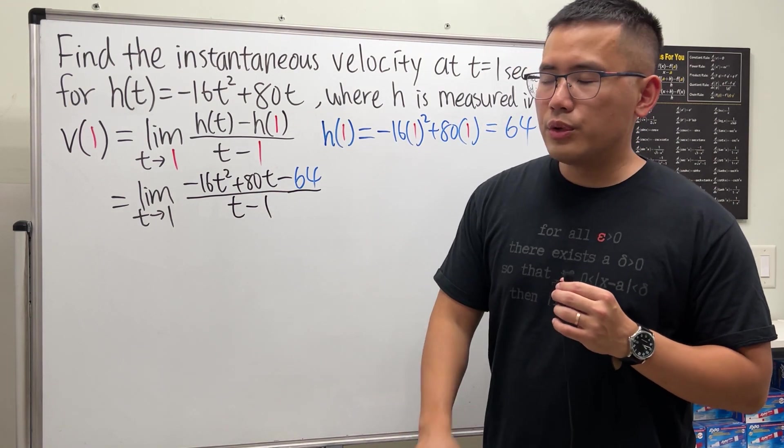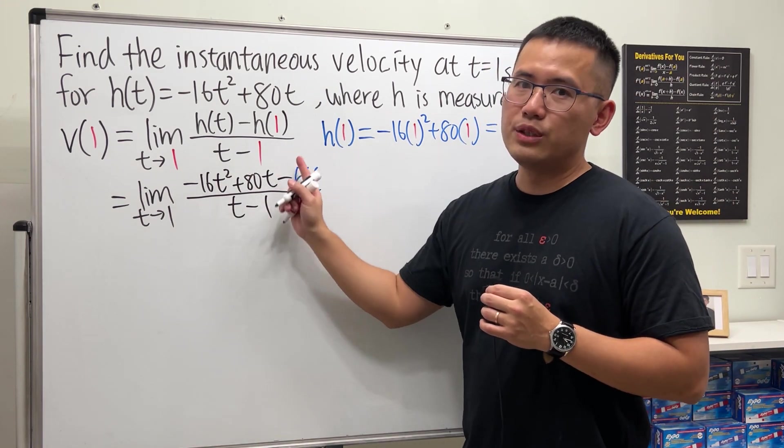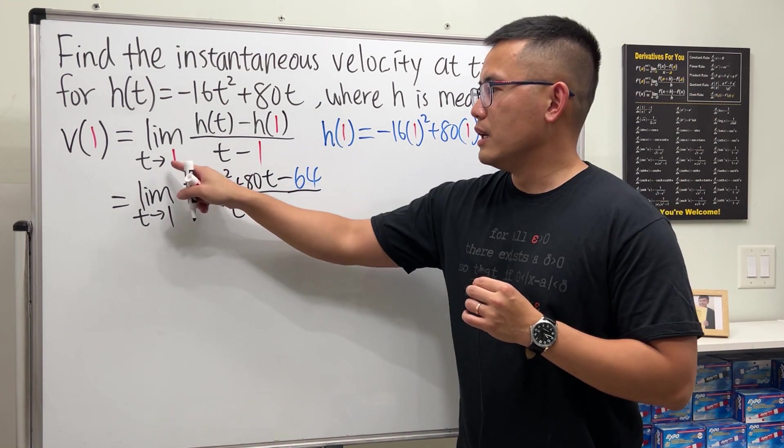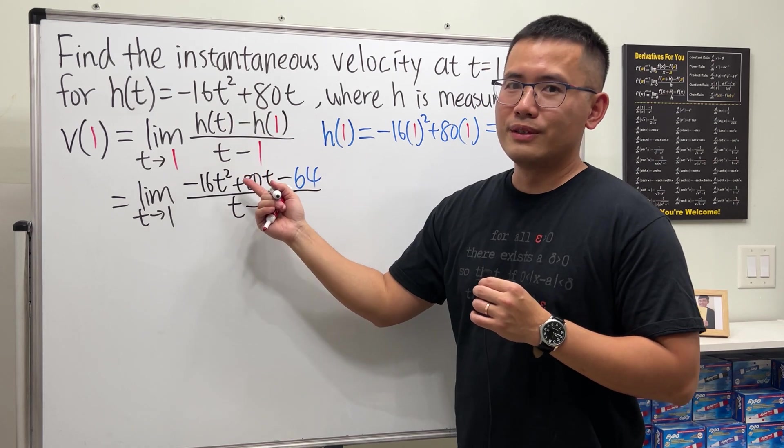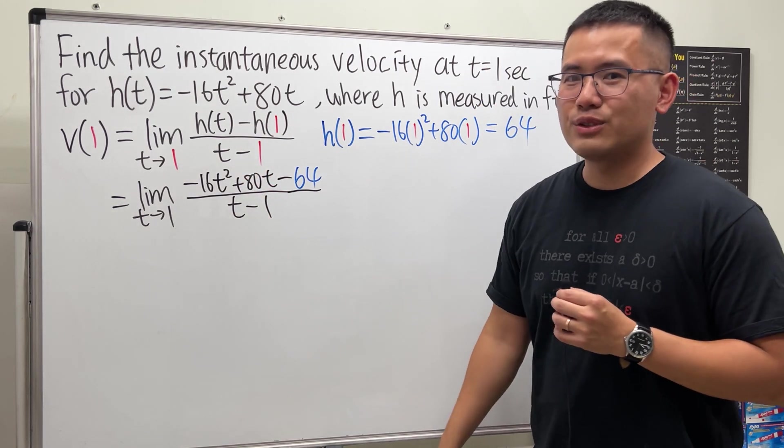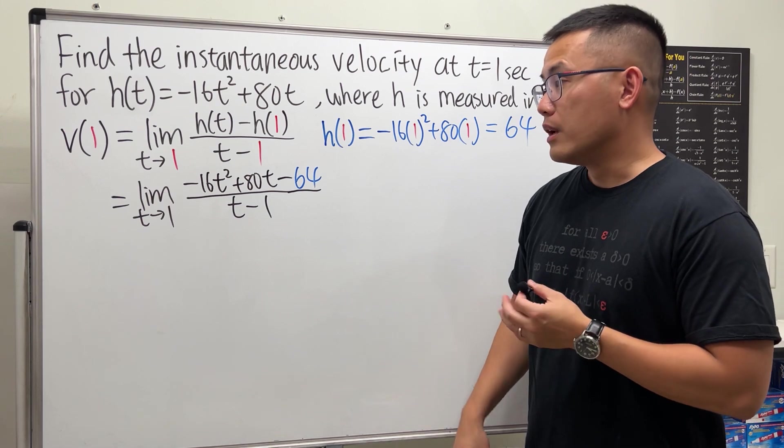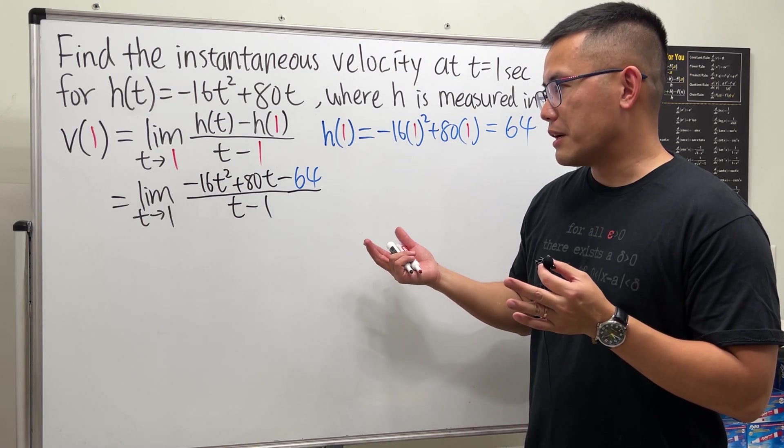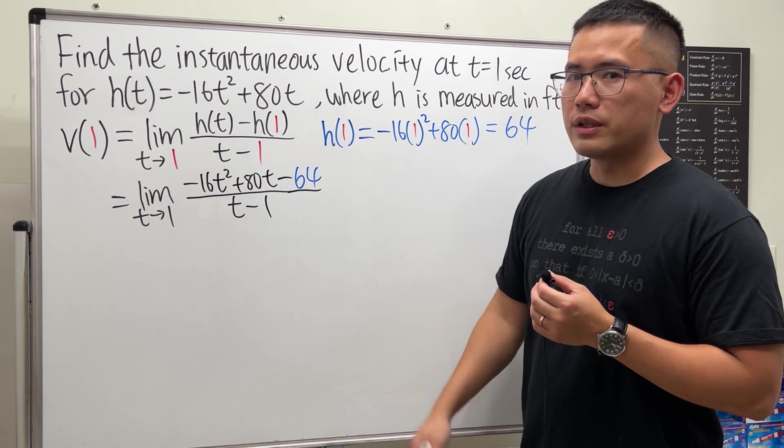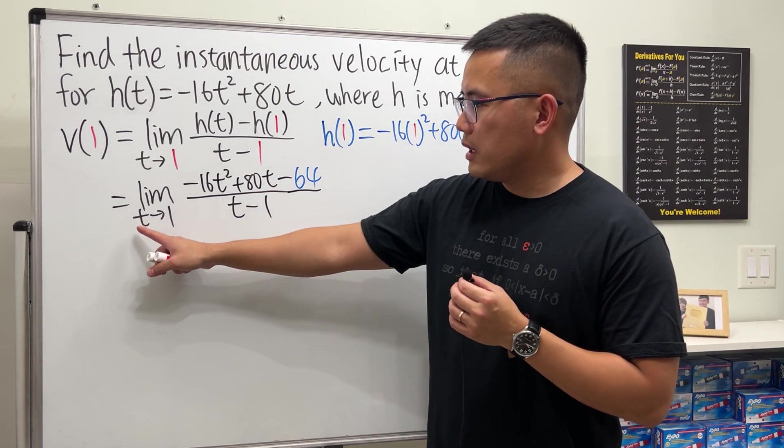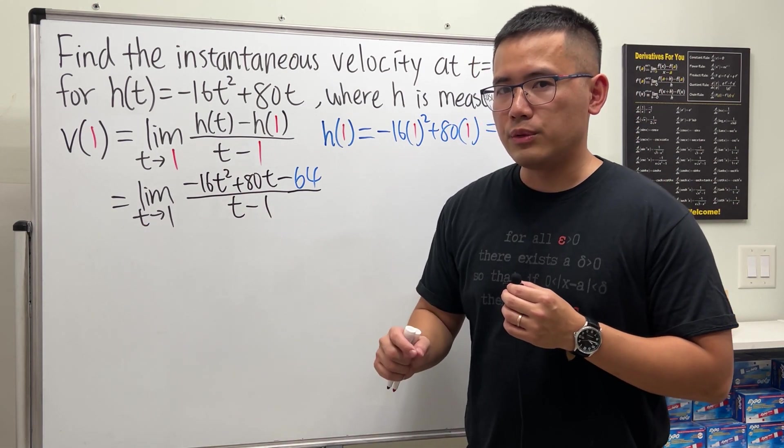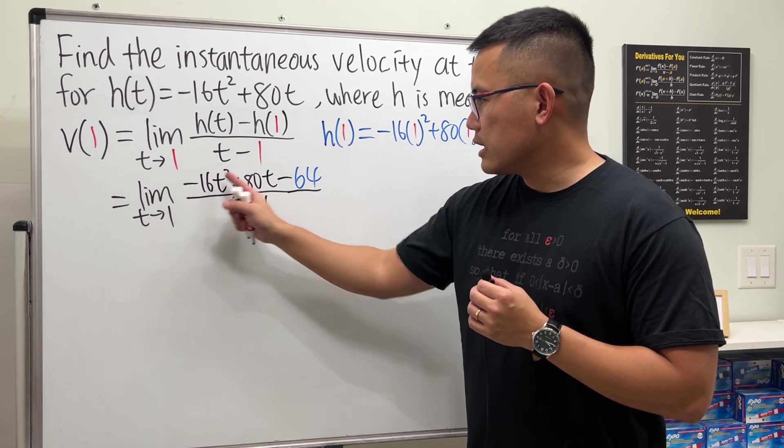And I guarantee you guys, if you plug in 1 into all the t's, you get 0 over 0. Because we set that to be so. It's always going to be like this to find instantaneous velocity. So we have to use some algebra in order to cancel the 0 over 0. Remember, if t is approaching 1, we should expect to cancel the t minus 1.